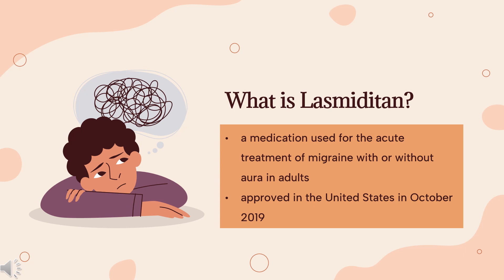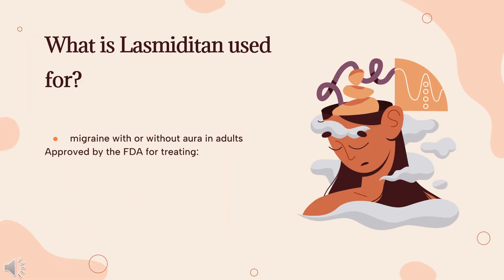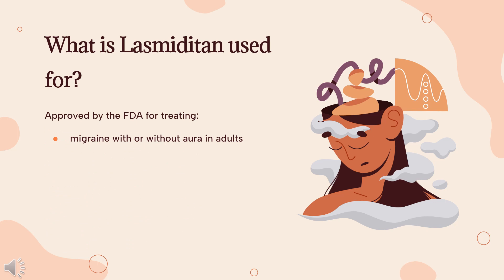The U.S. Food and Drug Administration (FDA) considers it to be a first-in-class medication. Lasmiditan is indicated for the acute treatment of migraine with or without aura in adults.